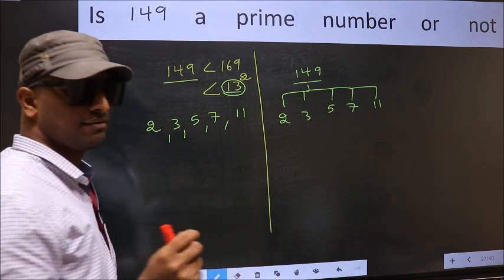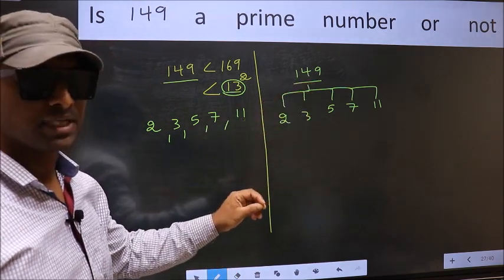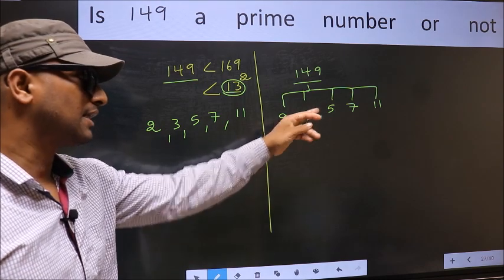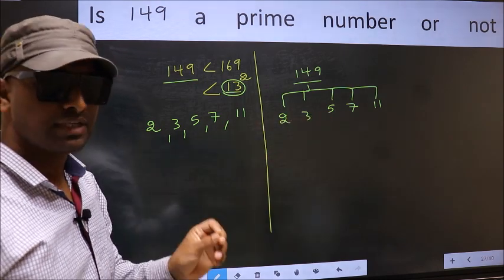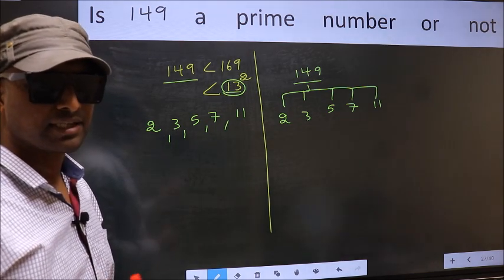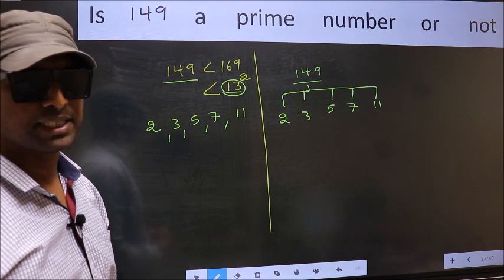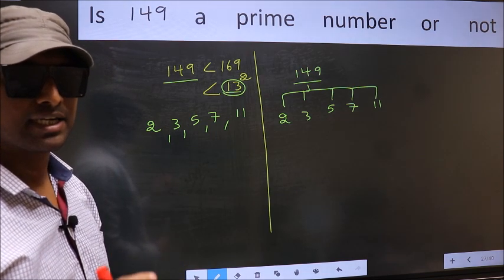If the given number is divisible by any one of these numbers, we say it is not a prime number; otherwise, it is a prime number. Did you understand the method? Let us check the divisibility.